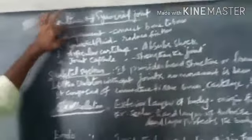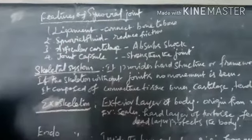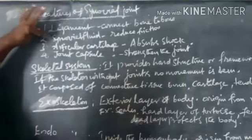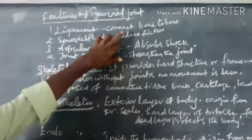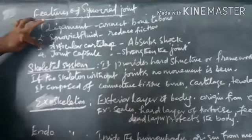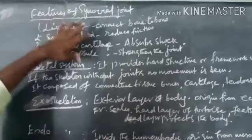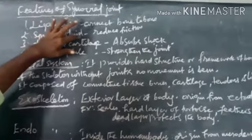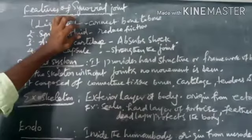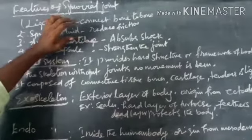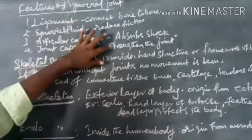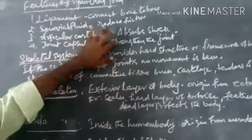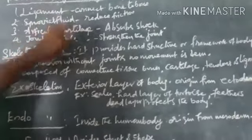The synovial joints have four main distinct features. First one is ligament which connects bone to bone. The fluid which is present in the joint we are called as synovial fluid, which reduces the friction of the joint. Third one is articular cartilage that absorbs shock and prevents friction between the ends of the bones in the joint. Finally, joint capsule which strengthens the joint and also it secretes the synovial fluid.